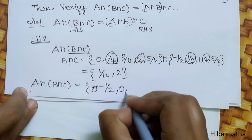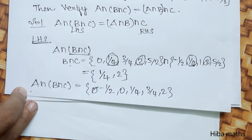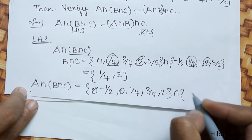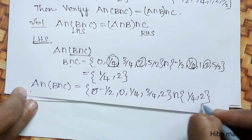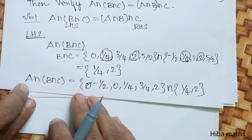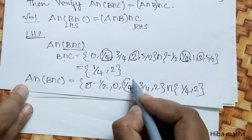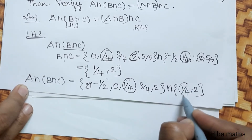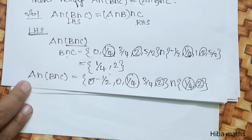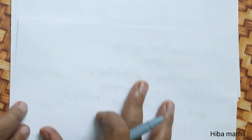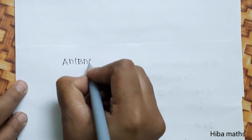A = {-1/2, 0, 1/4, 3/4, 2} intersection {1/4, 2}. The common elements are 1/4 and 2. So A intersection (B intersection C) = {1/4, 2}. This is the left-hand side result.